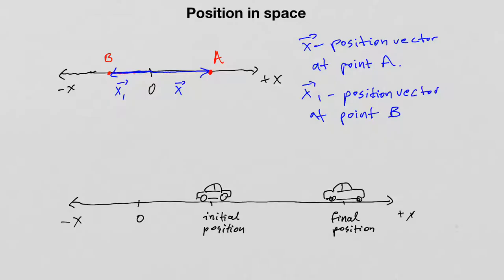For example, let's look at the motion of a car along a straight line, considering two different positions as the car moves in the positive X direction. Initially, the car is at some position, which I call the initial position, and I assign position vector X0 to it. As the car moves, it reaches some other position down the road, the final position, and I assign position vector X to it.